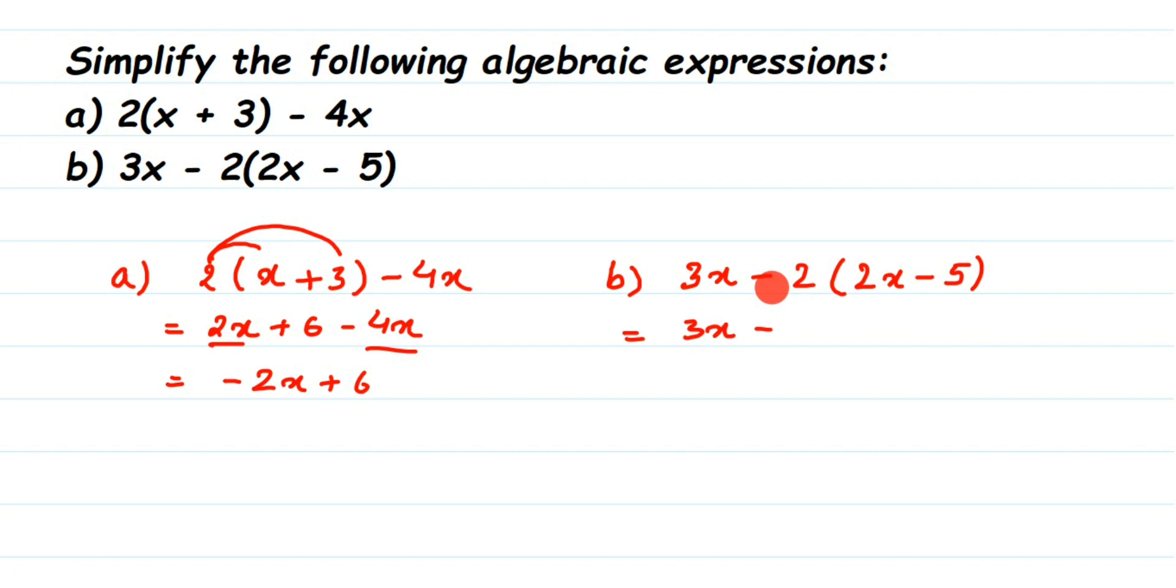Otherwise signs will change and you will not get the desired answer. So multiply with the minus sign: minus 2 into 2x is minus 4x, so we'll get minus 4x here. And then minus into minus, minus 2 into minus 5 is plus 10.